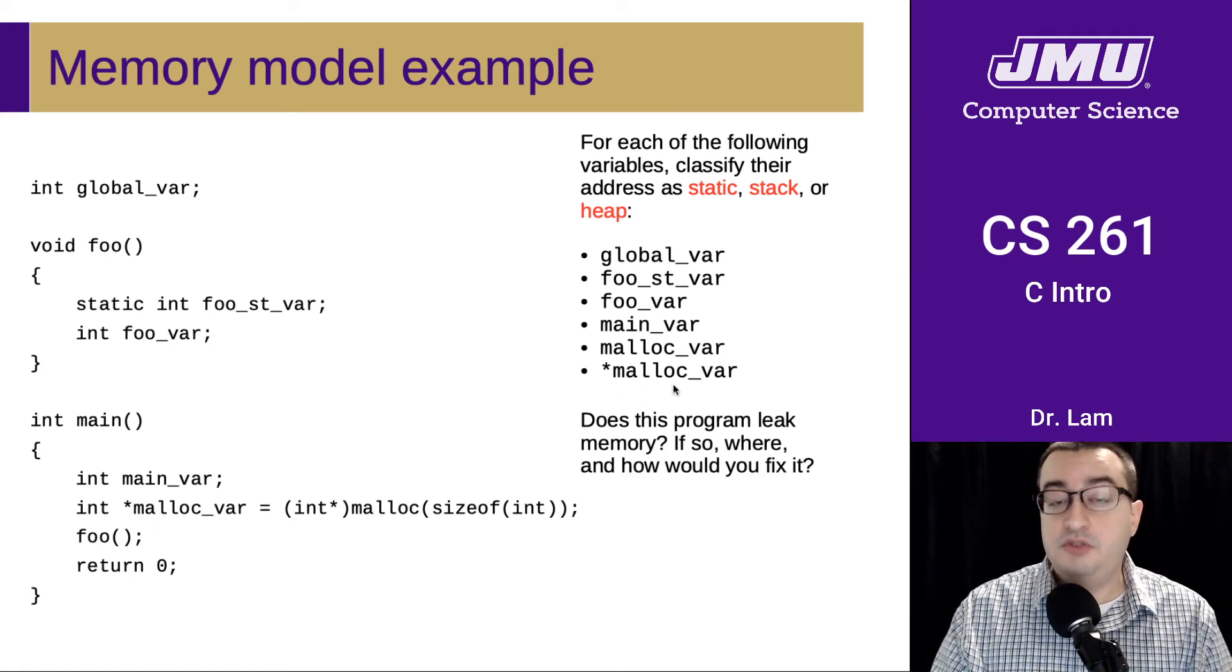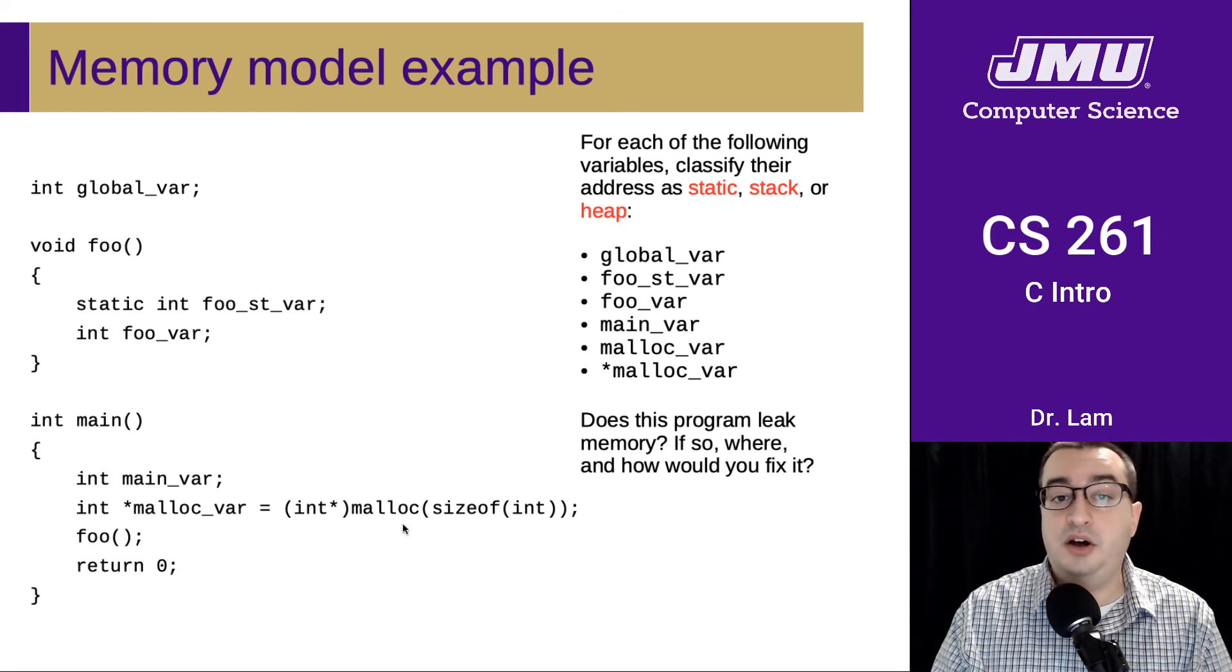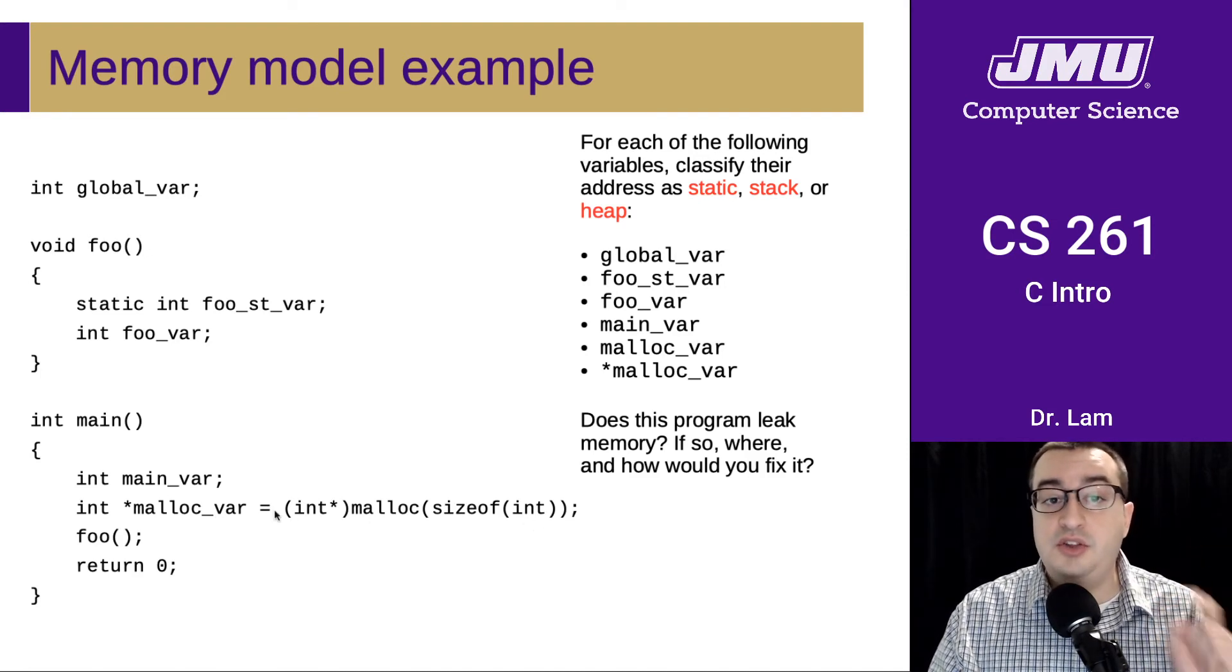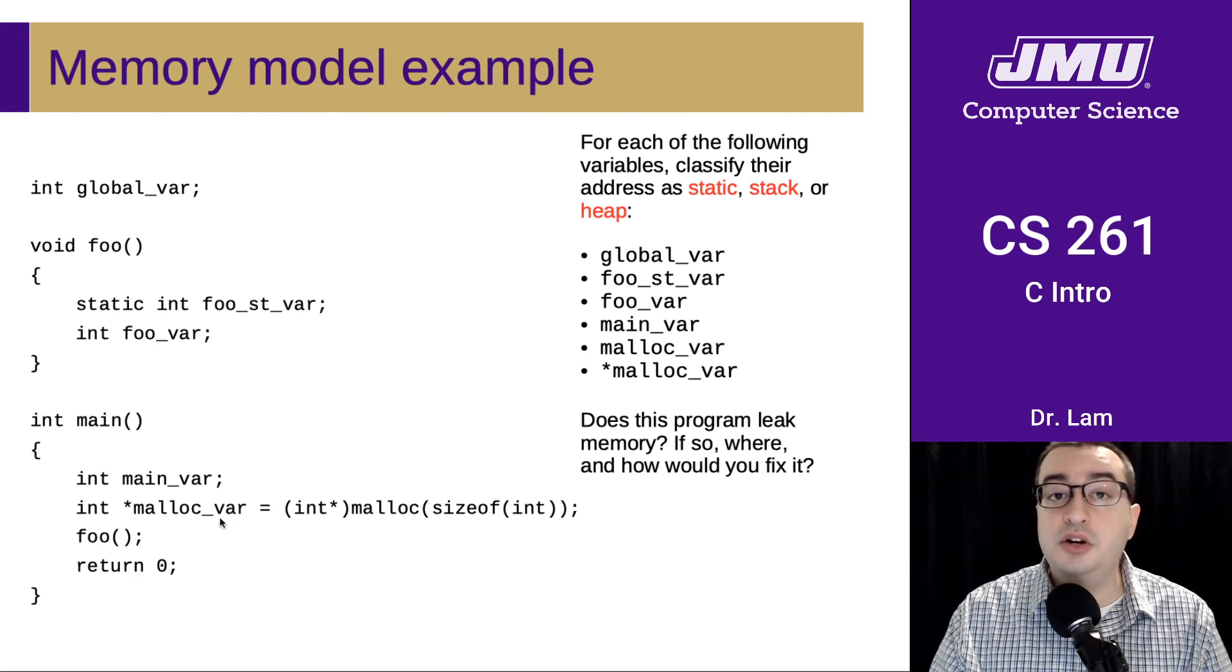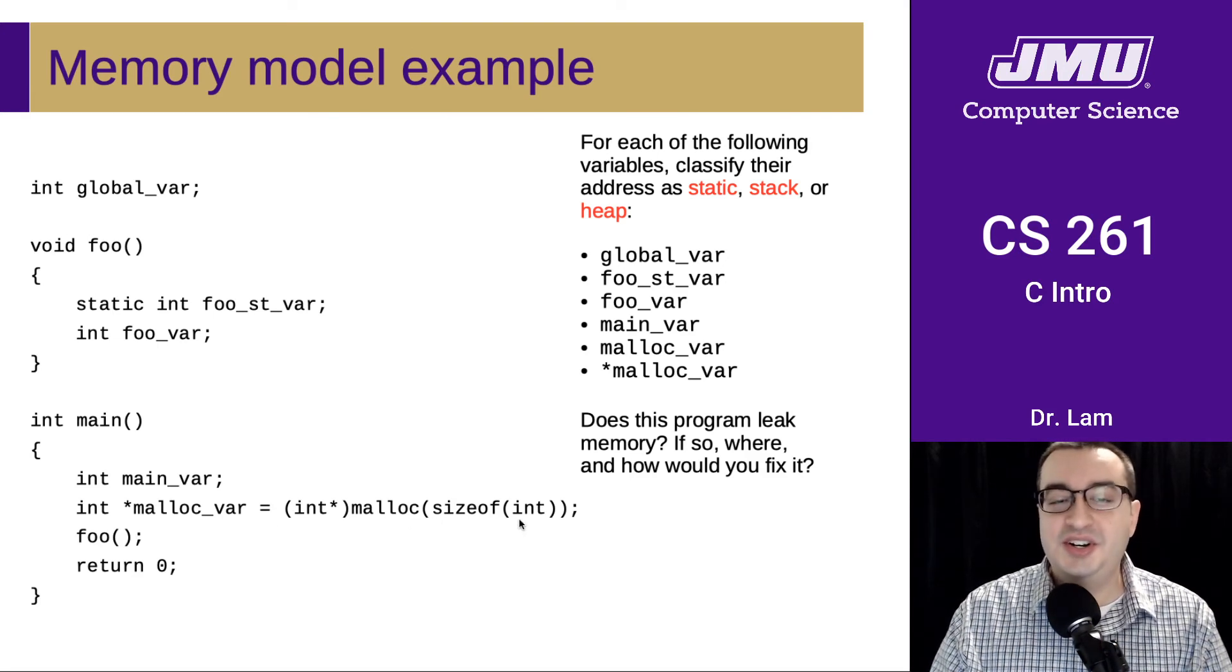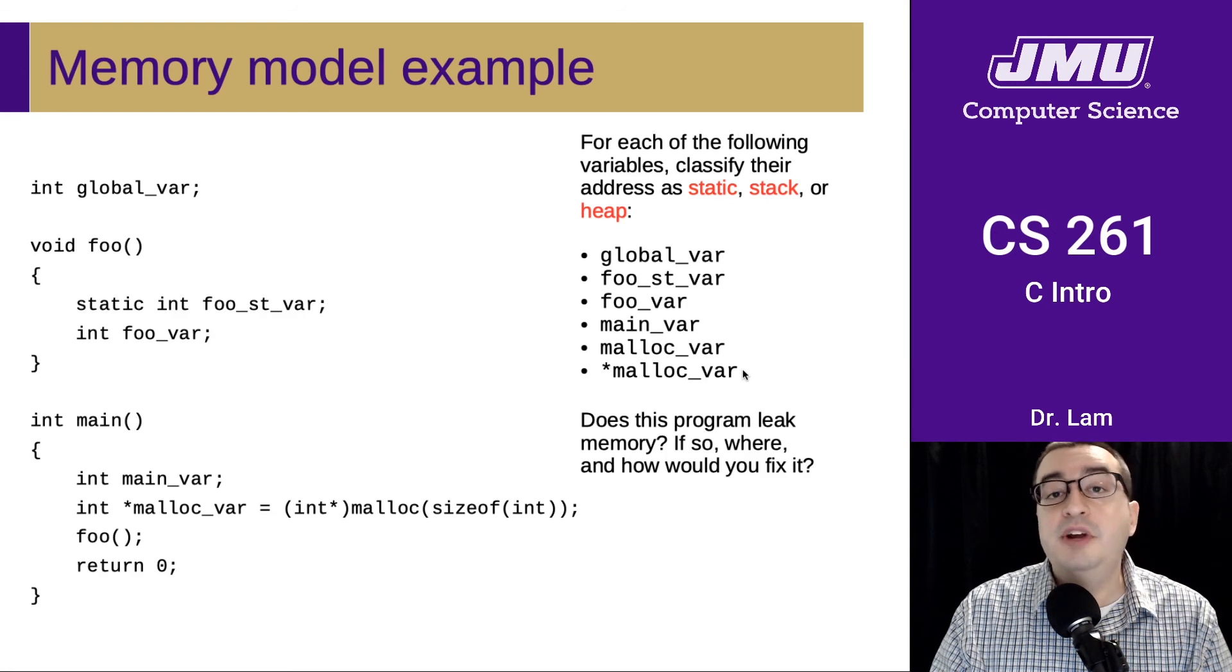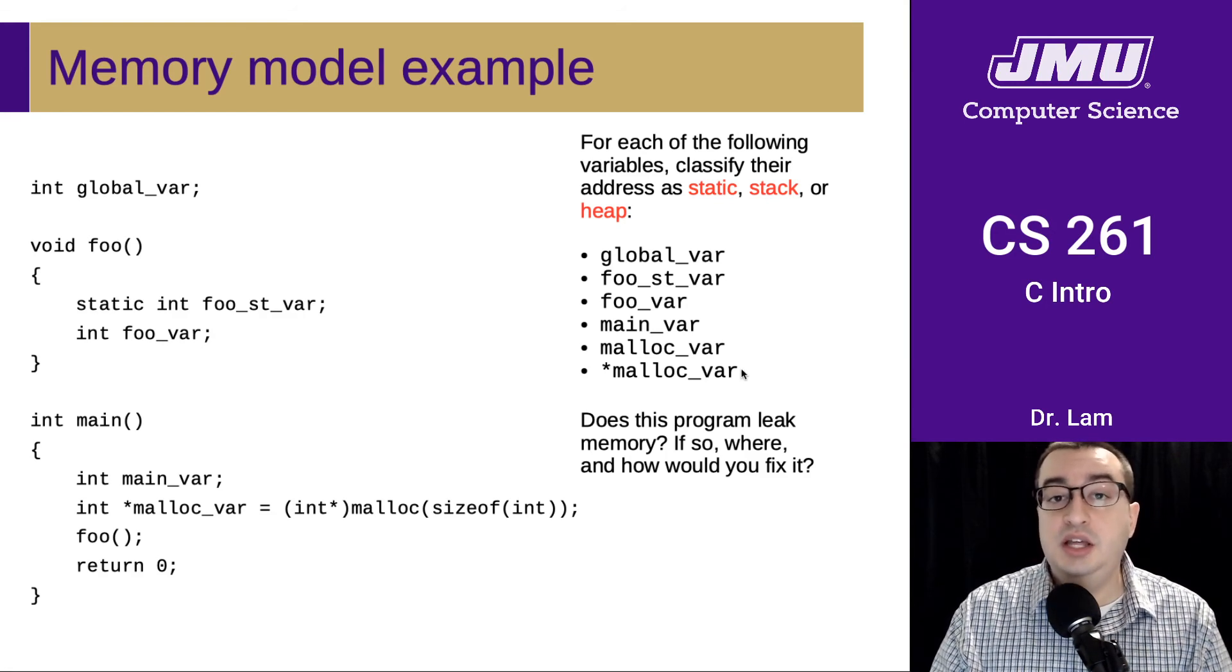Star malloc_var, however, is referring to a region on the heap that has been allocated using this malloc call. And you can see here that we have allocated enough space on the heap for one integer. And so malloc_var is going to be a pointer to a one integer size slot in memory that has been allocated and its address stored as the value of malloc_var. So whereas the malloc_var itself is a local variable stored on the stack, the region of memory that malloc_var is pointing to is on the heap.